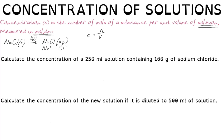A simple example: calculate the concentration of a 250 millilitre solution containing 100 grams of sodium chloride. We start by converting grams to moles, where the number of moles equals mass divided by molar mass: 100 divided by 58.5, which tells us there are 1.71 moles of sodium chloride present.